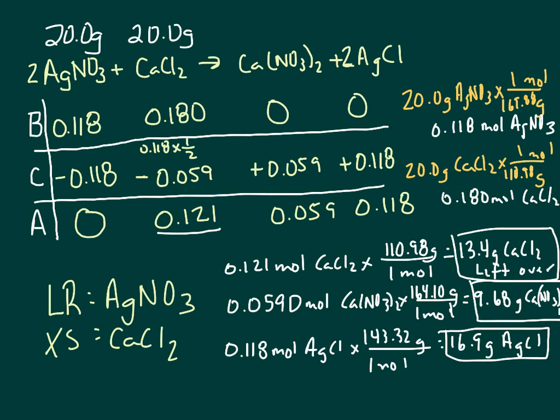So I took the liberty of going ahead and working all those out. And I did add an extra zero right here, because I really should have had one more sig fig on this one. So the 0.0590. Used the molar mass for calcium nitrate. I got 9.68 grams. And for the silver chloride, 143.32 was the molar mass. 16.9 grams.